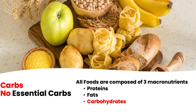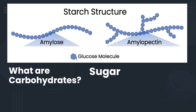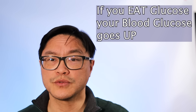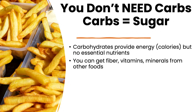The third macronutrient is carbohydrates — these are the starches and sugars. Things like bread, rice, and potatoes. What you have to understand is that there are no essential carbohydrates. Carbohydrates are glucose — that's their chemical structure. If you look at a starch such as flour, it's composed of a long chain of glucose in two patterns called amylopectin and amylose. When your body breaks them down, you're absorbing glucose and your blood glucose goes up. Carbohydrates certainly provide energy, but no essential nutrients.